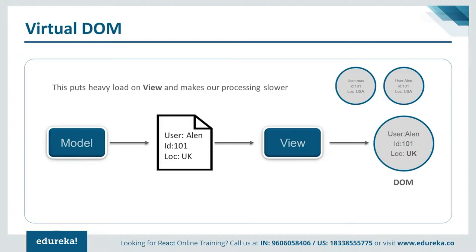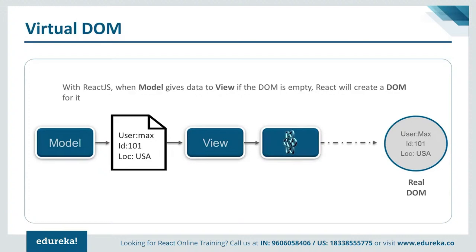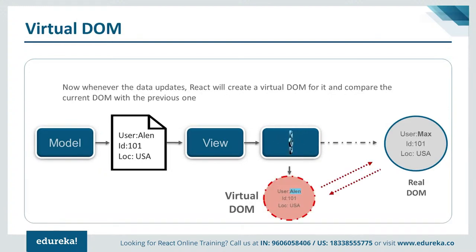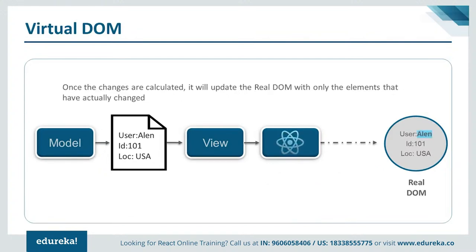With React, the virtual DOM sits between the real DOM and the browser. When the model gives data to the view and the DOM is empty, React creates a DOM for it. Whenever data gets updated, React creates a virtual DOM, compares it with the current DOM, and applies only the differences. Once changes are calculated, it updates the real DOM only for elements that have changed — through the diff and patch algorithm, where diff determines differences and patch applies changes.